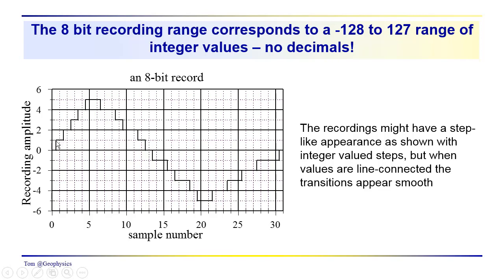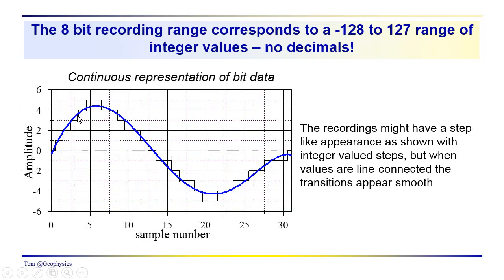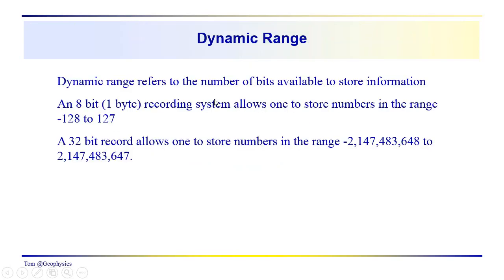And so, the data that you record may look something like this, where it would have a stepwise appearance. This would be an 8-bit record. However, what you see in your seismic section is usually connected by a continuous line. So, we get a nice, smoothly varying waveform as we look at the amplitudes that were recorded for each of these samples. We've got sample number here. Remember that sample number corresponds to time. We need to know what the sample interval is in order to know what the time is. And, also, we don't have decimals. So, in this 8-bit recording system, we have numbers that go from minus 128 to 127, and they're integer values.